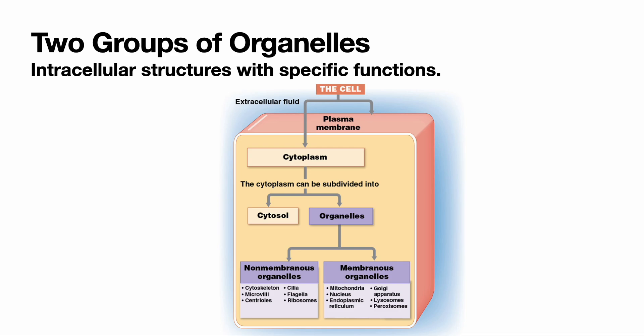There's another group of organelles that don't have that membrane, but are just as important. That includes things like the cytoskeleton, which gives a framework to the cell; centrioles, which play an important role in mitosis; and ribosomes. The cell has a plasma membrane on the outside separating it from its external environment. Inside is cytoplasm — a salty, jelly-like, watery substance. Cytoplasm includes the cytosol and the organelles; cytosol refers specifically to the liquidy inside of the cell.